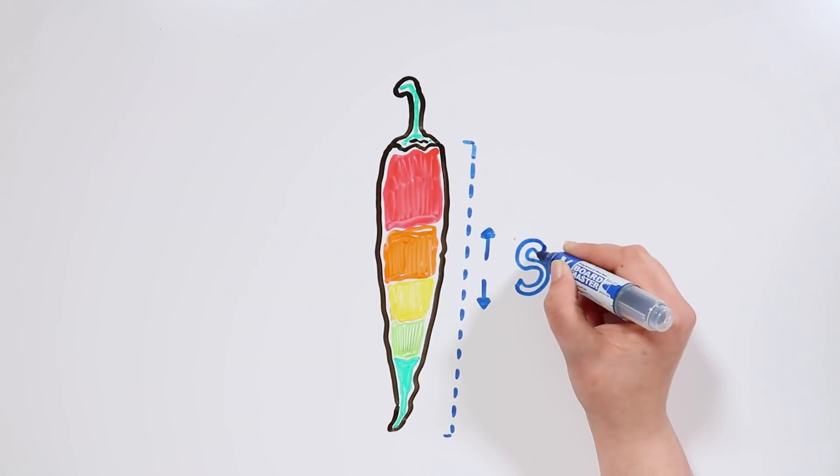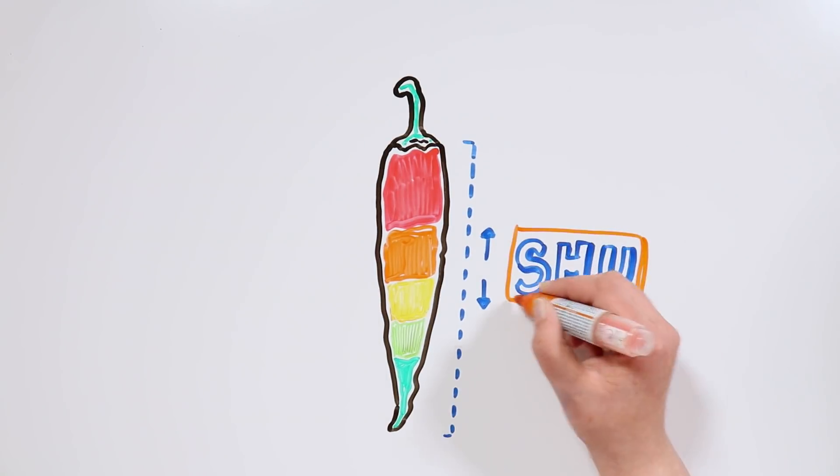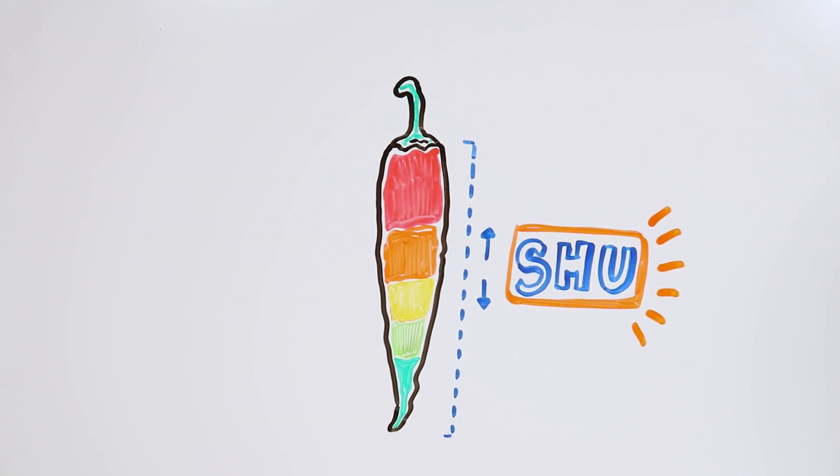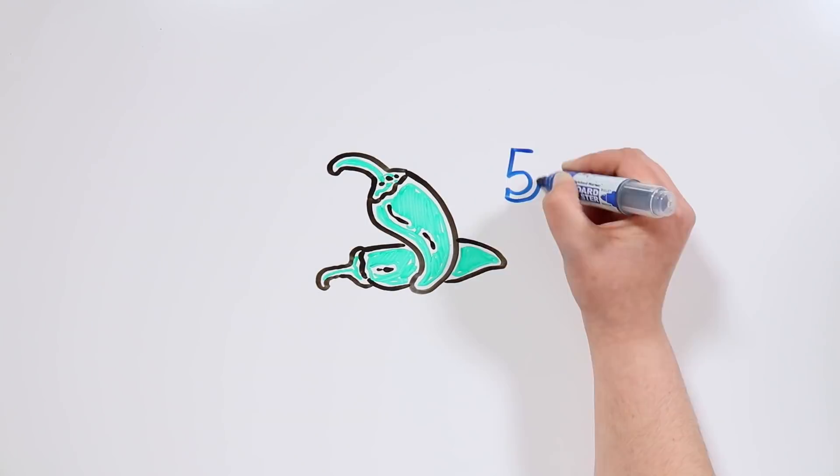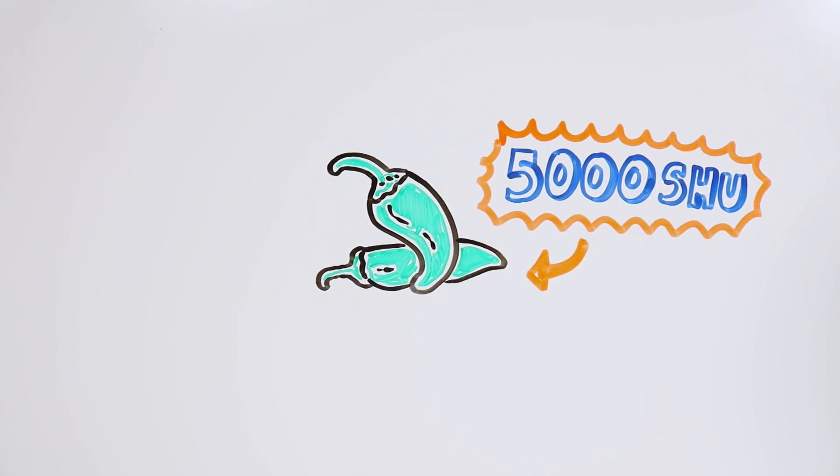There are less subjective ways out there, but if you are curious, chili peppers are classified in Scoville heat units. For instance, a jalapeño has up to 5000 units, which means it had to be diluted up to 5000 times for the capsaicin not to be detected.